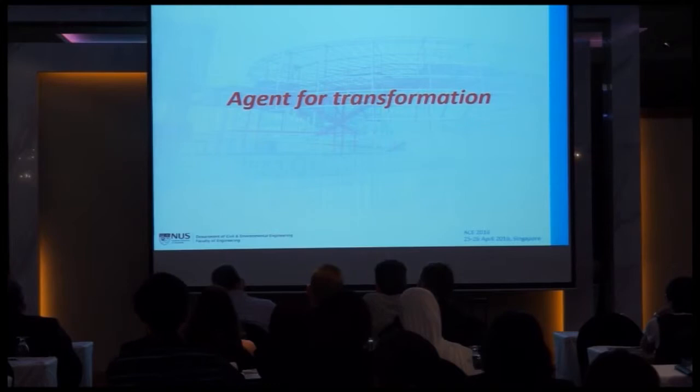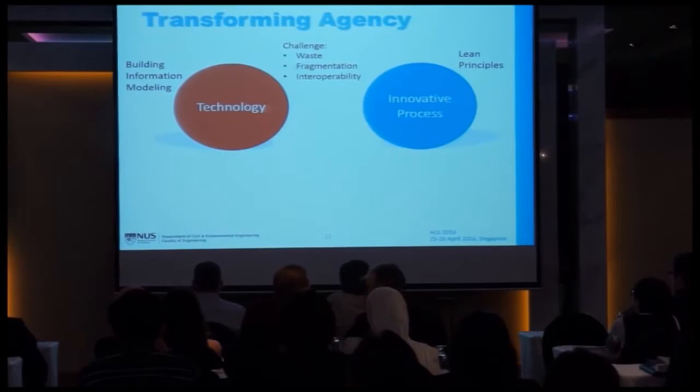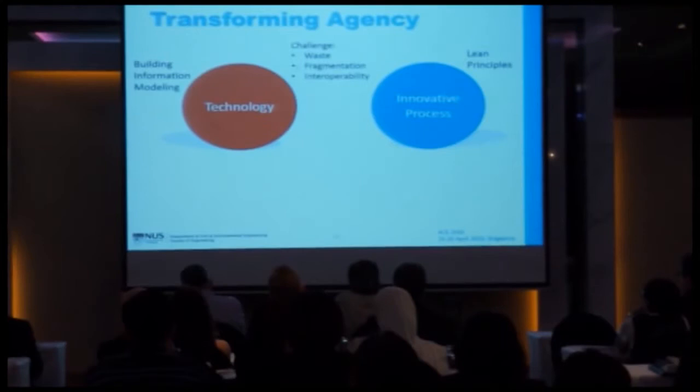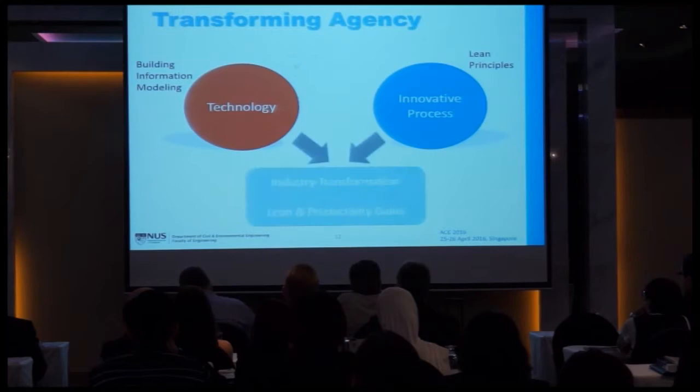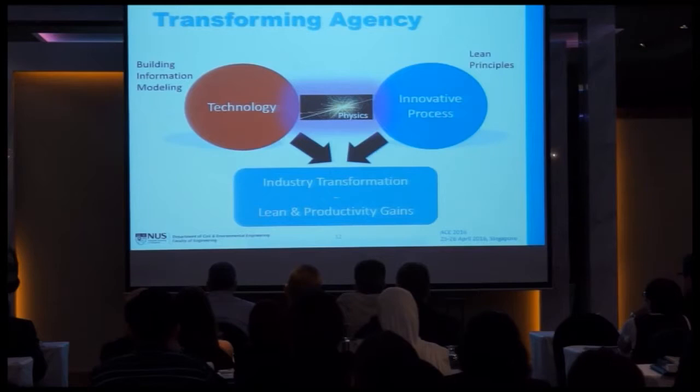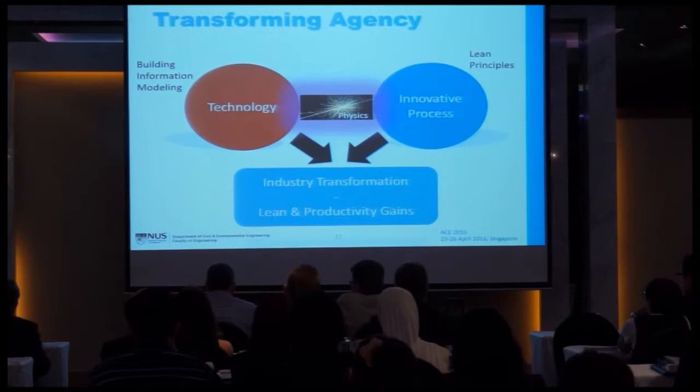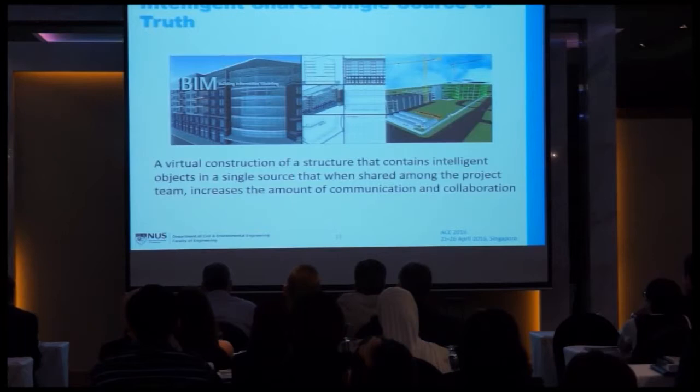The agent for transformation: technology — that's BIM — and innovative process — that's lean. This combination can address the waste, fragmentation, and interoperability challenges, leading to an industry transformation with lean driving productivity gains. I want to address the physics between the two: the science that must govern how the process works with this technology.